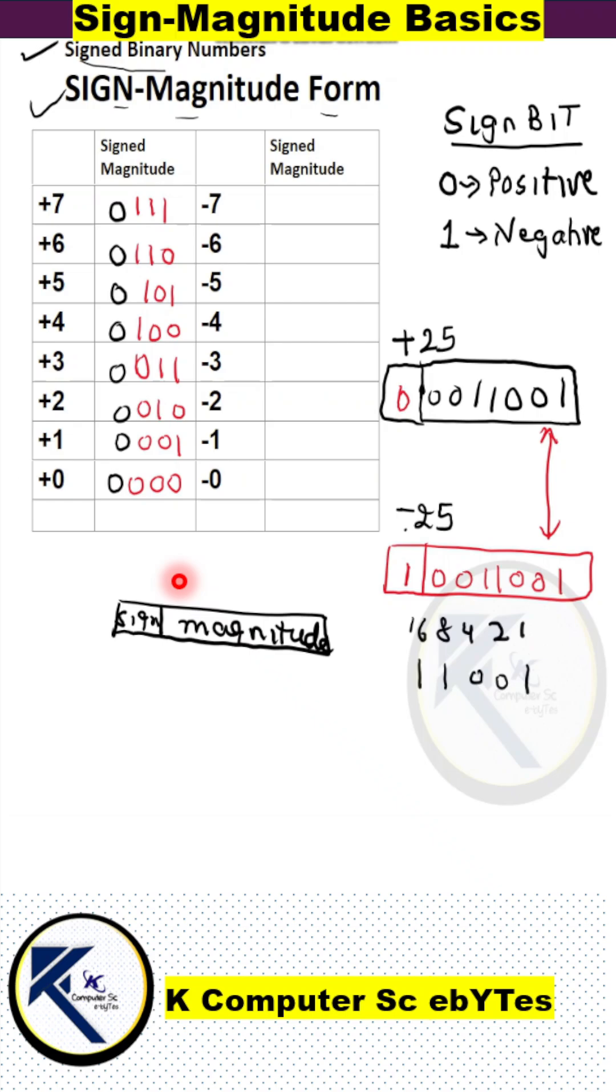For the negative numbers, the magnitude part will be same as their corresponding positive number. For example, the magnitude of minus 7 is 111 and for plus 7 also it is 111. But the leftmost bit for the negative numbers will be 1.